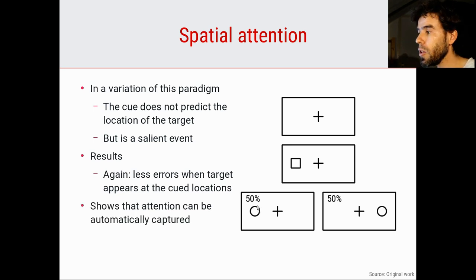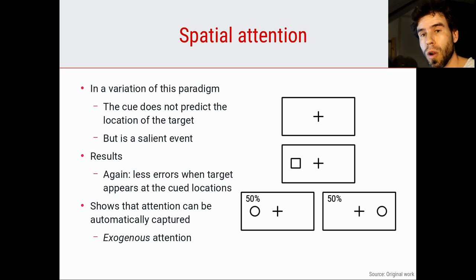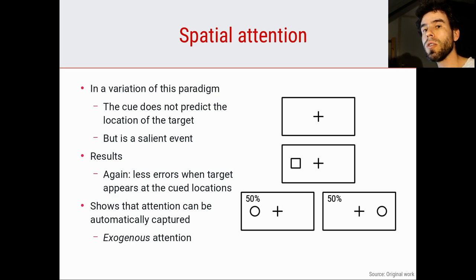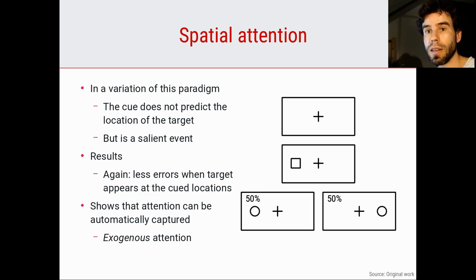This shows that attention can be automatically captured. This is called exogenous attention because the shift of attention does not come from within us but is imposed upon us by the environment — we have no voluntary control over it. Even if we want to ignore the rectangle, because we know it disrupts our performance, we are not able to do so because it really automatically grabs your attention. Together, these two paradigms show two simple properties of attention: A, you often voluntarily control what you attend to, but B, you don't always voluntarily control what you attend to. That matches how we intuitively feel attention is driven.